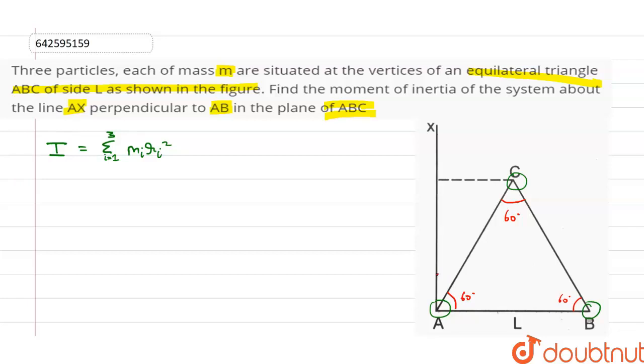This means that this angle will be 90 minus angle CAB, which will be equal to 30 degrees. And since this is perpendicular, this angle will become 60 degrees.